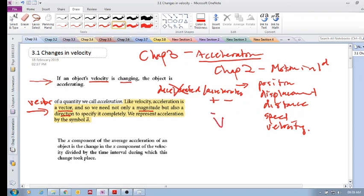We need both magnitude and direction to specify it. So remember, velocity was written like that, velocity vector.